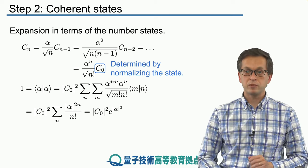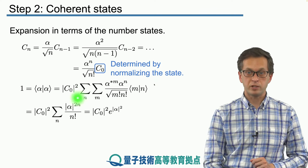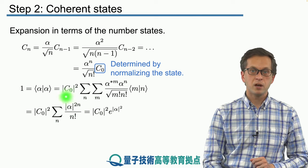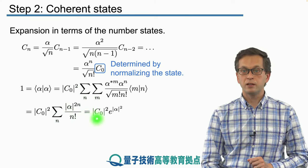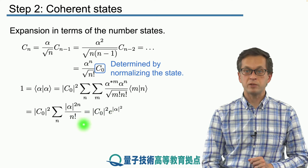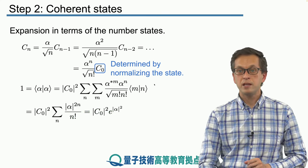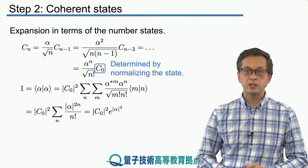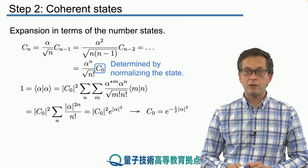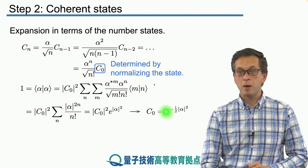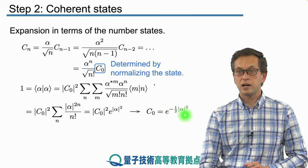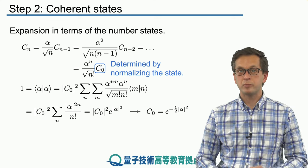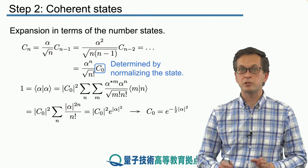So our double sum simplifies to a single sum over the following expression. And here we can recognize this. This is nothing but the Taylor expansion for an exponential. Therefore, we can write that this is equal, the sum is equal to C0 modulus squared times e to the power of mod alpha squared. And there we have it. We've got an expression for C0 by equating it to 1. And we find that C0 is e to the power of minus a half times modulus of alpha squared. And now we are done with finding the expressions for an expansion of coherent state in terms of the number states.